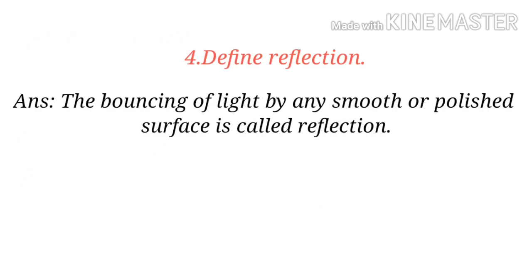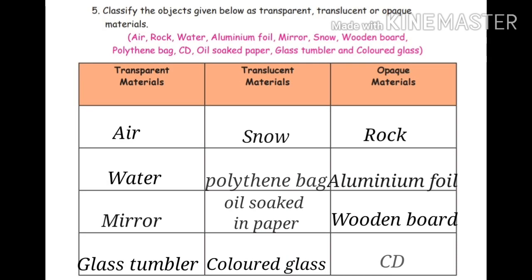Define reflection. Answer: the bouncing of light by any smooth or polished surface is called reflection. Fifth one: classify the objects as transparent, translucent or opaque. Air, rock, water, aluminium foil, mirror, snow, wooden board, polythene bag, CD, oil-soaked paper, glass tumbler and coloured glass. Transparent materials: air, water, mirror, glass tumbler.